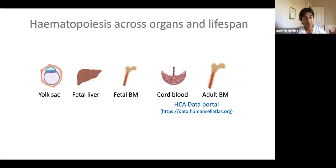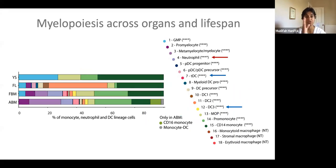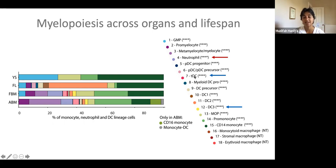Now that we've also got datasets from many organs, we can begin to put this information together, not just for prenatal development, but using data available through the HCA data portal called Blood and Adult Bone Marrow, to begin to understand how things are evolving across the human lifespan. One example here shown in the myeloid lineage, where you can compare across yolk sac, fetal liver, fetal bone marrow, and adult bone marrow. I mentioned the emergence of granulocytes such as neutrophils in the fetal bone marrow, but also the emergence of greater variety of dendritic cell subsets such as transitional dendritic cells expressing XCL1 SIGLEC6 and also the DC3 subset.